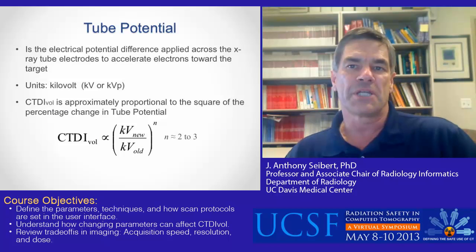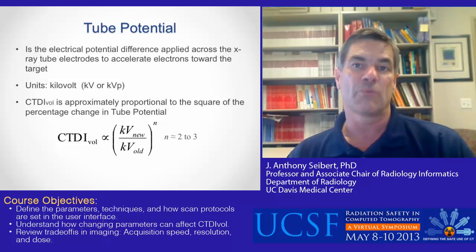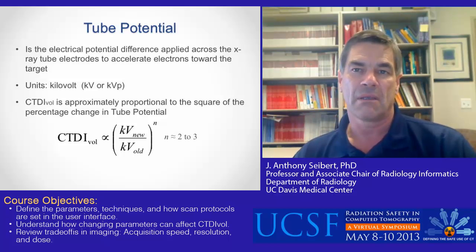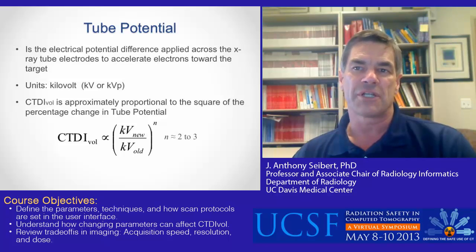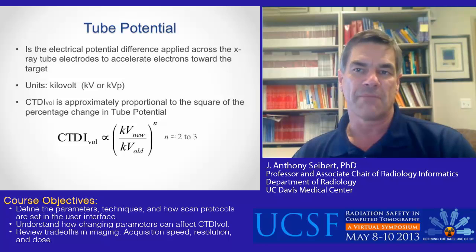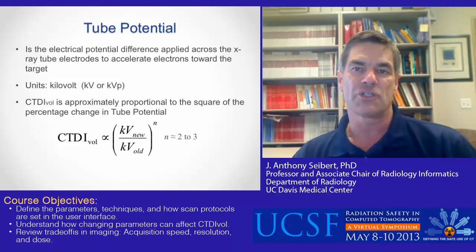The tube potential is the potential difference between the two electrodes in an x-ray tube, with units of kilovolt (kV) or kVp, where p indicates peak. Because x-ray production efficiency is higher at higher kV, the number of x-ray photons increases, as does the overall average energy of the x-rays produced and the number of x-rays transmitted through the body. The CTDI vol is approximately proportional to the ratio squared of the change in tube potential, with all other parameters fixed.